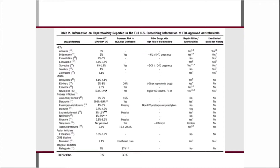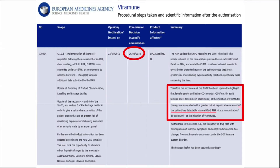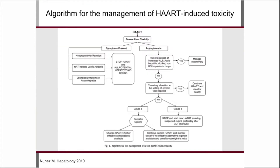Just a word on nevirapine: it can cause liver toxicity and hypersensitivity reactions in patients with high CD4 counts and in those with detectable HIV viral load. However, if your patient is virally suppressed, even with a high CD4 count, this risk no longer applies. European recommendations state that women with a CD4 count above 250 or men above 400 should not be started on nevirapine first line — unless the patient already has undetectable plasma HIV viral load, in which case it is safe to use.